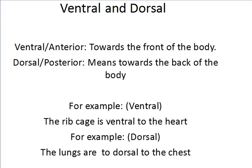Ventral and dorsal. Ventral has almost the same meaning as anterior, which means towards the front of the body. Dorsal has the same meaning as posterior, which means towards the back of the body. For example, the ribcage is ventral to the heart, and the lungs are dorsal to the chest. This covers all the body orientations — have a nice day.